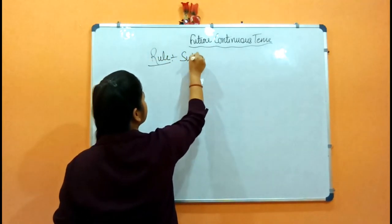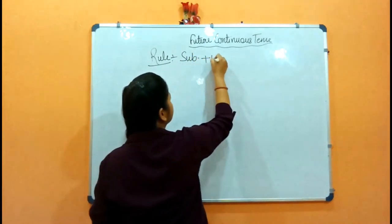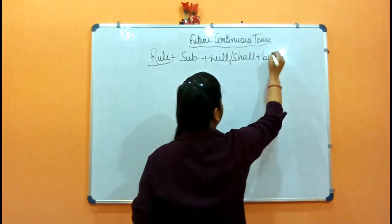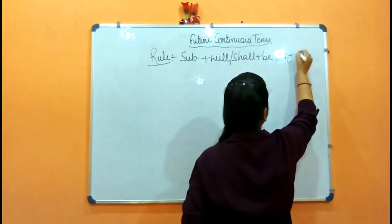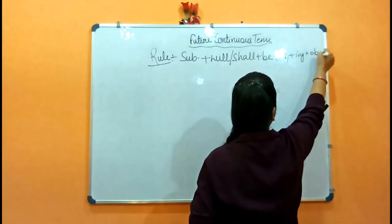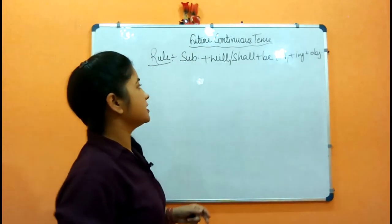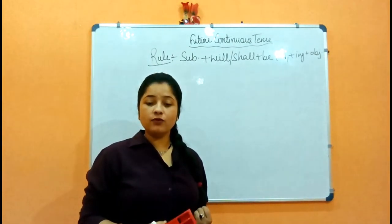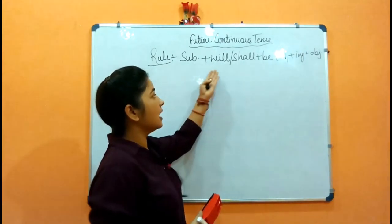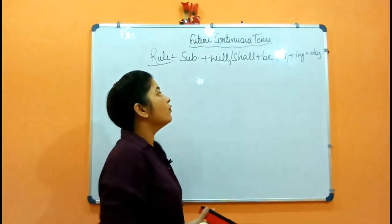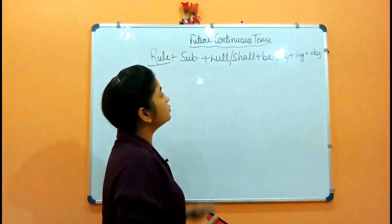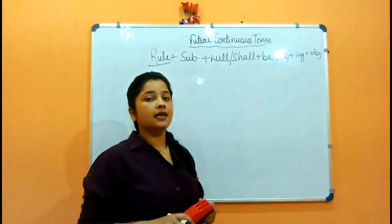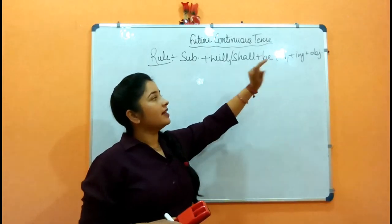The rule is: Subject + will or shall + be. Subject comes first, then will or shall. As I told you before, will or shall is used for the future. Just as in present continuous we use 'is/are/am', and in past we use 'was/were', in future continuous we use will or shall, plus 'be' extra.